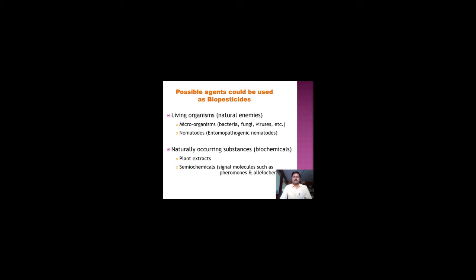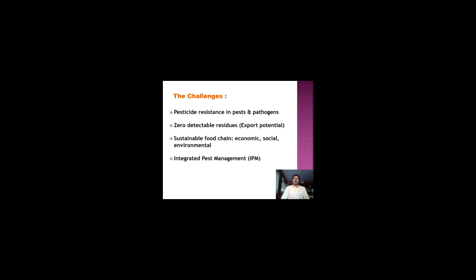Possible biopesticide agents include living microorganisms — bacteria, fungi, viruses, or entomopathogenic nematodes — or natural materials like plant extracts, semiochemicals such as signal molecules or pheromones, and allelochemicals used for trapping insects. Regarding challenges for biopesticide use: first is pesticide resistance — many chemical pesticides are failing because pests and pathogens have developed resistance through repetitive use. However, since biopesticides are living entities, it is very difficult for pests and pathogens to develop resistance against them.